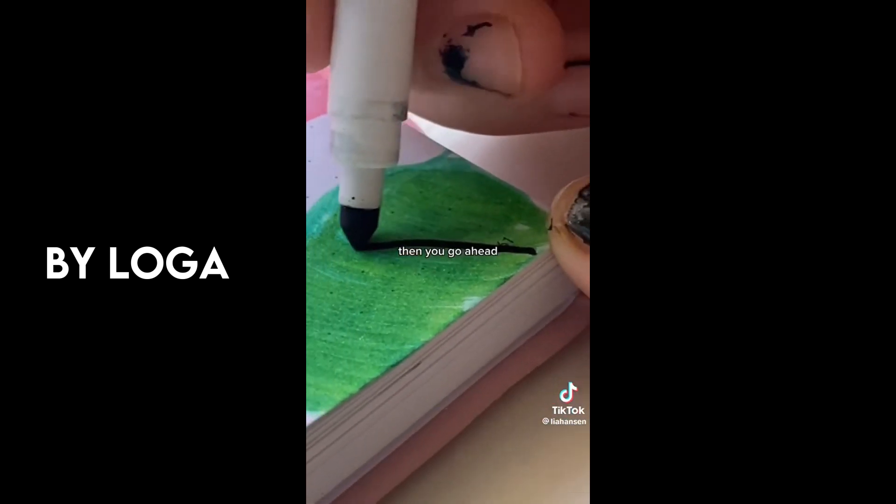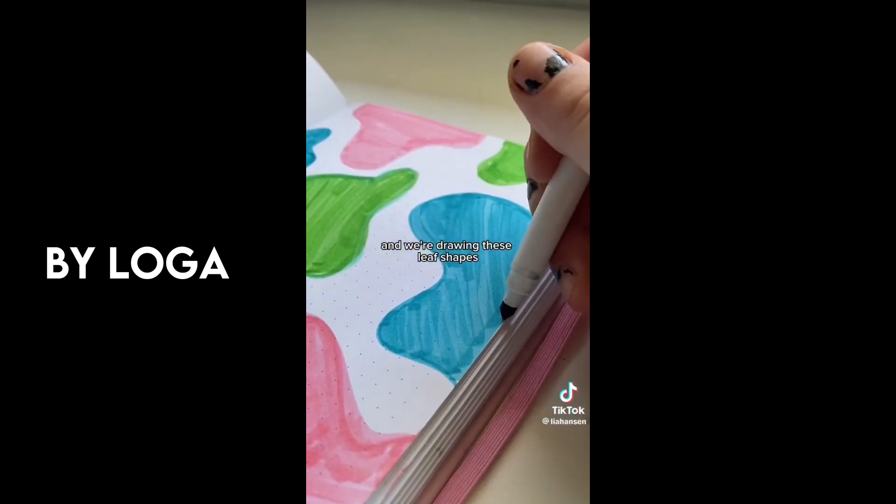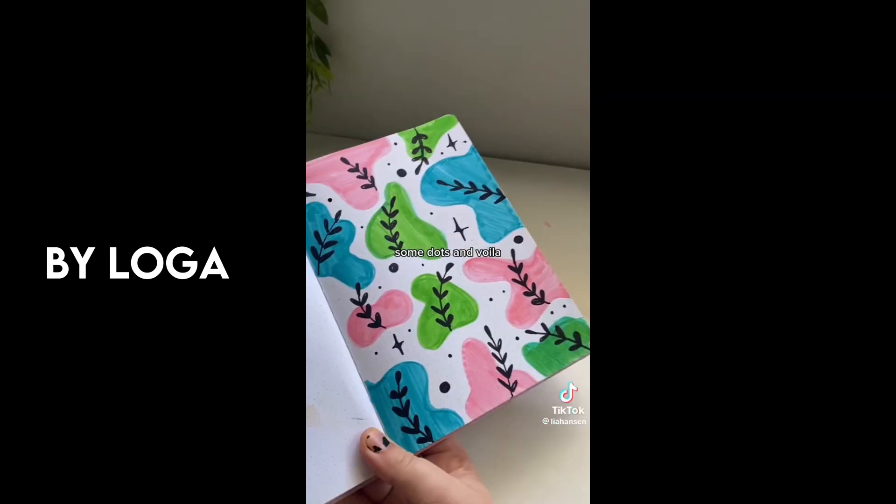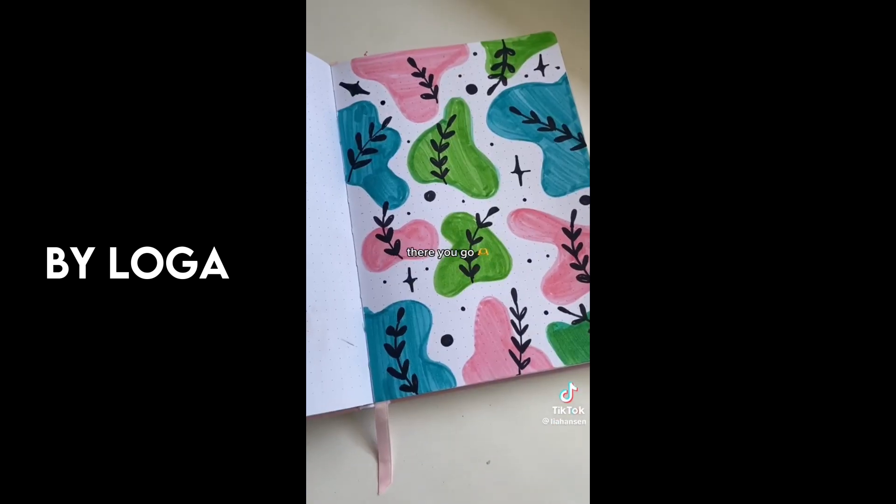That's about it. Then you're gonna go ahead, grab a black marker, and we're drawing these leaf shapes kind of coming out of the sides of the blobs. Then we're gonna add some little sparkles, some dots, and voila, there you go.